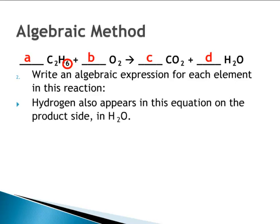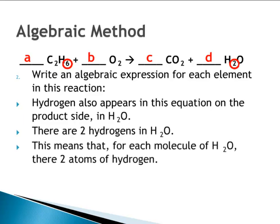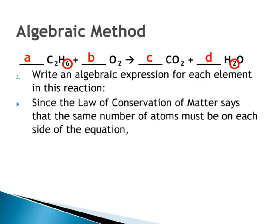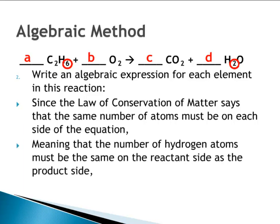Hydrogen also appears on the product side in H2O. There are two hydrogens in H2O, meaning for each molecule of H2O there are two atoms of hydrogen. For every coefficient D of H2O, there are two D hydrogen atoms. Since the number of hydrogen atoms must be the same on both sides, we know that 6A equals 2D.